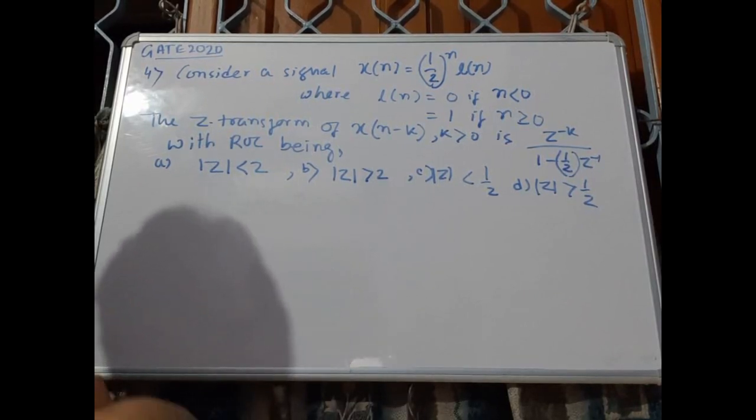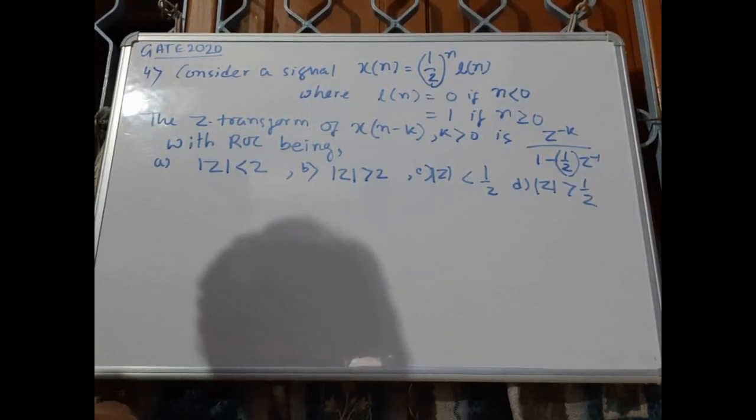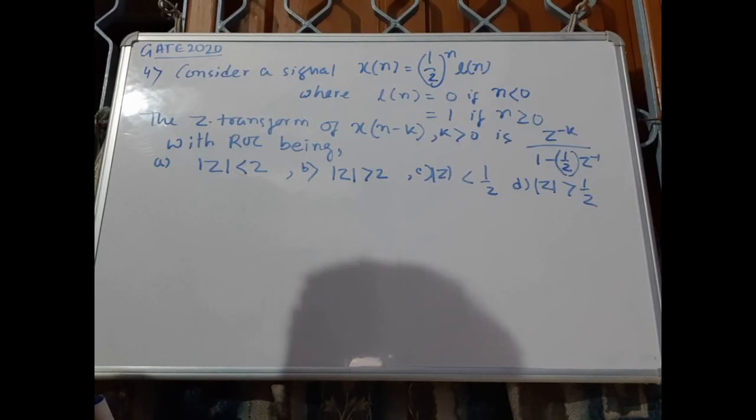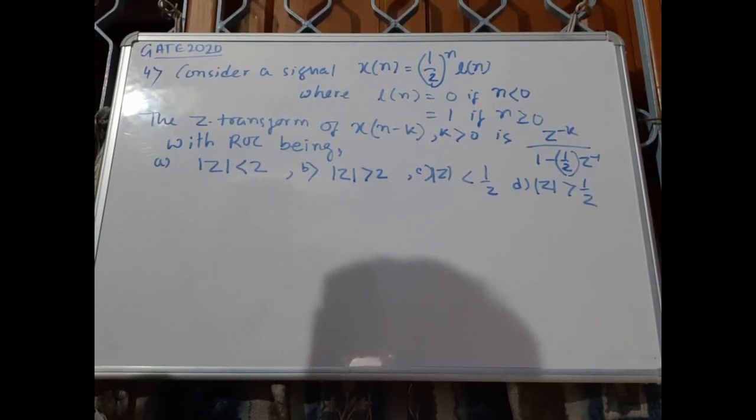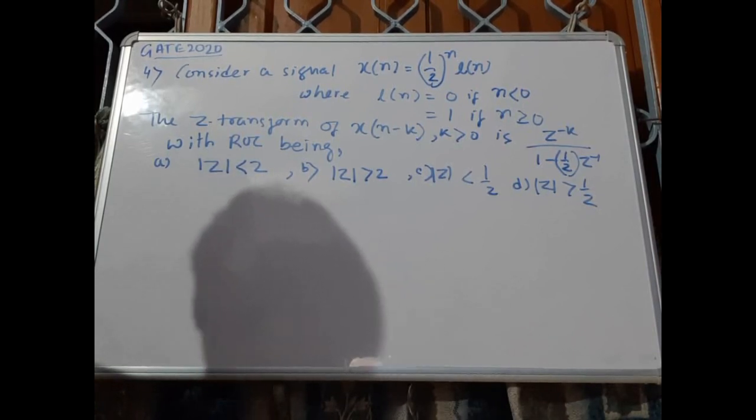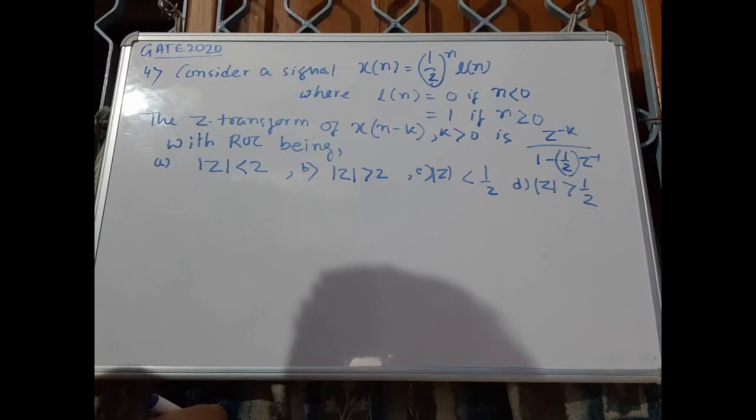This is problem number 4 in GATE 2020. Consider a signal x(n) equals half to the power n times l(n), where l(n) equals 0 if n less than 0 and equals 1 if n greater than or equals to 0. The Z-transform of x(n-k) where k greater than 0 is z to the power minus k divided by 1 minus half z inverse with ROC being: option A: |z| less than 2, option B: |z| greater than 2, option C: |z| less than half, and option D: |z| greater than half.